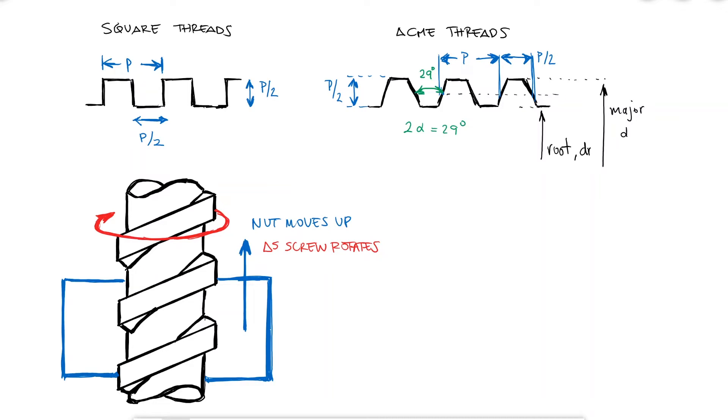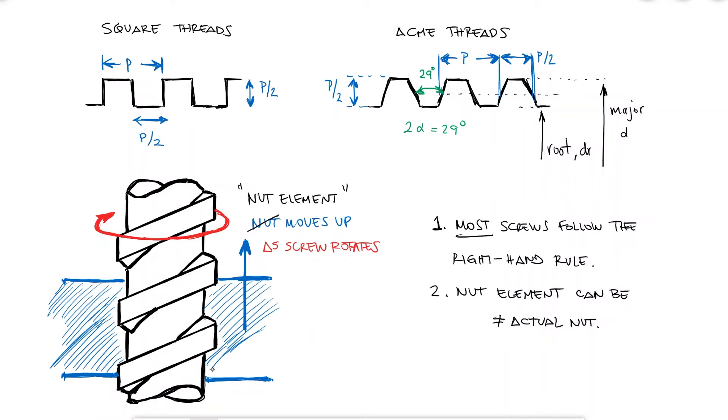Screws are manufactured specifically to follow the right hand rule unless otherwise noted. Left hand threads are still really important for some applications. The nut element can be any threaded component that exists in angular motion with respect to the screw, so it's not actually a nut that you would think of when talking about nuts and bolts. And finally,